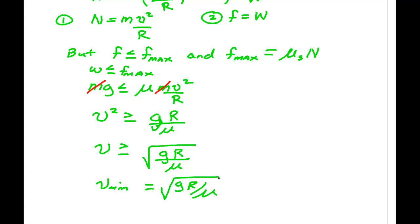To find the minimum, we now just simply take the equal sign rather than greater than or less than. So, the minimum speed is the square root of g times r over mu.